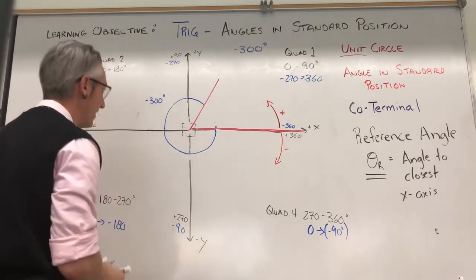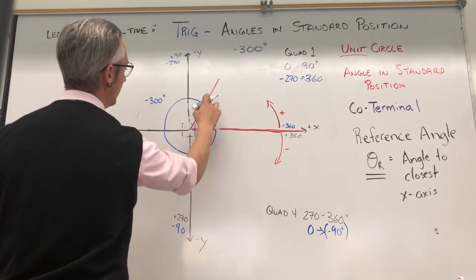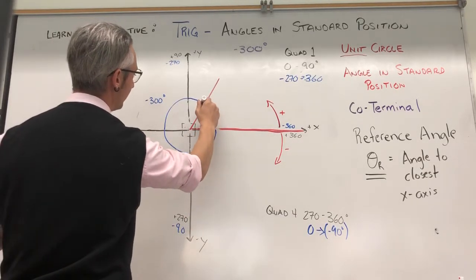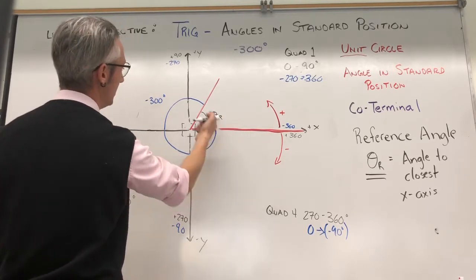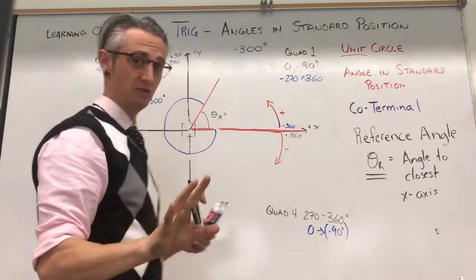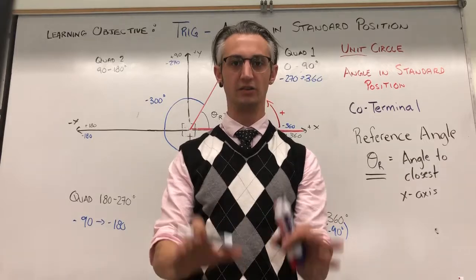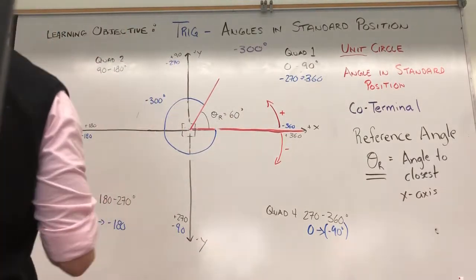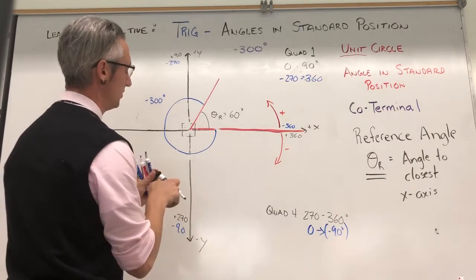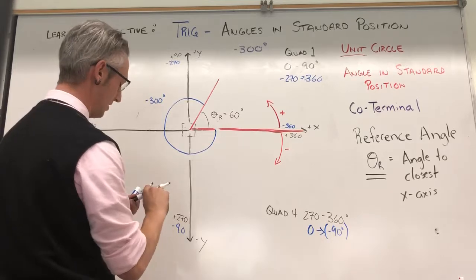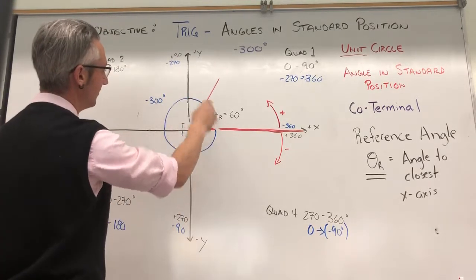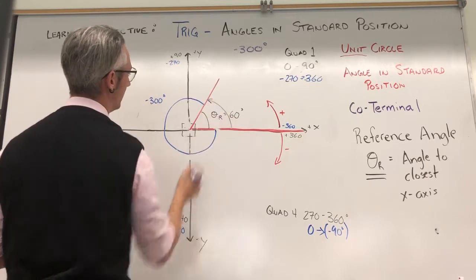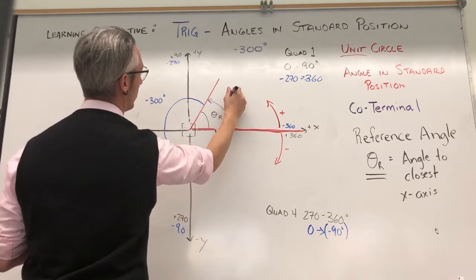Now I want to find my reference angle. My reference angle is the angle that gets me to the closest x-axis — in this case the positive x-axis. It's simply 360 minus 300. And remember, reference angles are always positive, so it's positive 60 degrees. For the coterminal angle: because I was going clockwise negative, my coterminal is going to go in the opposite direction — and that's positive 60 degrees. So sometimes our reference angle and our coterminal angle in standard position are the same thing.